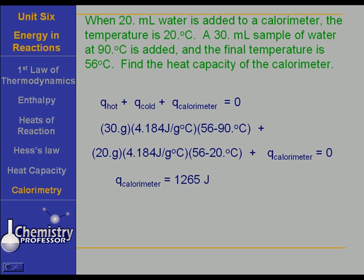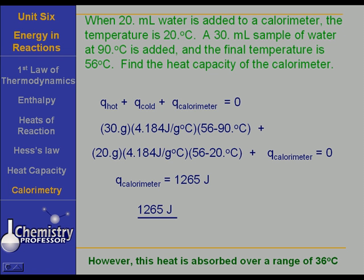That's the amount of heat the calorimeter absorbed over that range of temperature change — over 36 degrees Celsius. That is not the heat capacity of the calorimeter. To find the heat capacity, we take the 1,265 joules and divide it by 36 degrees Celsius, and we find the heat capacity of the calorimeter is 35 joules per degree Celsius. So in the future, if we use this calorimeter, we allow for absorption of about 35 joules per degree Celsius.